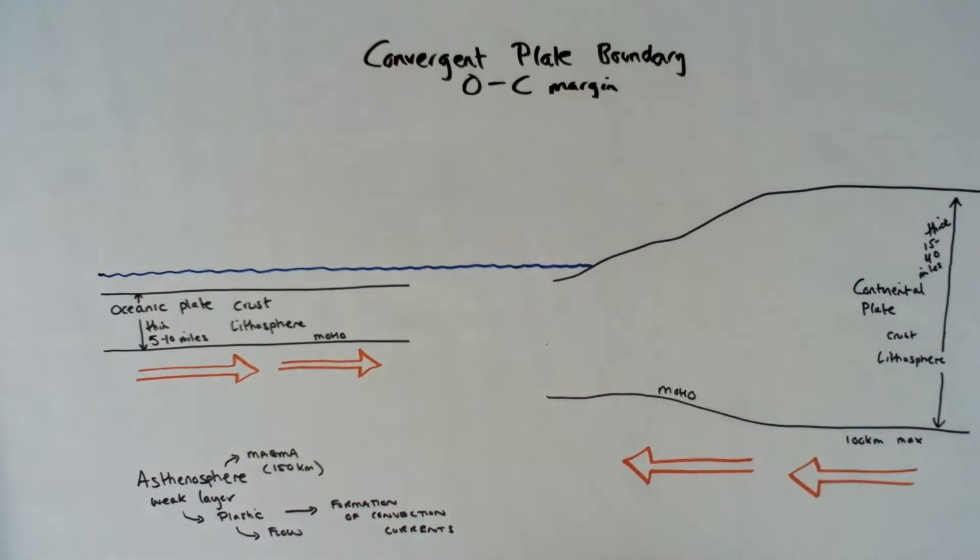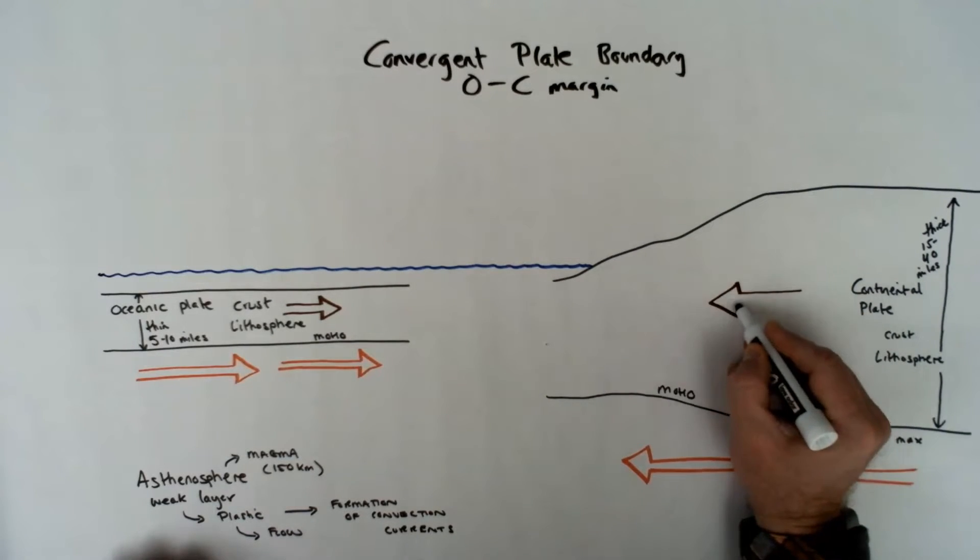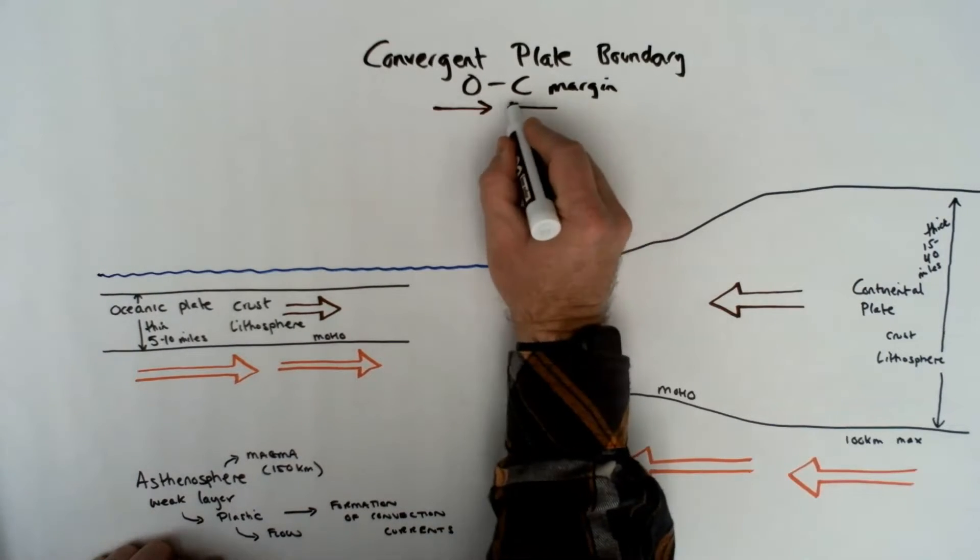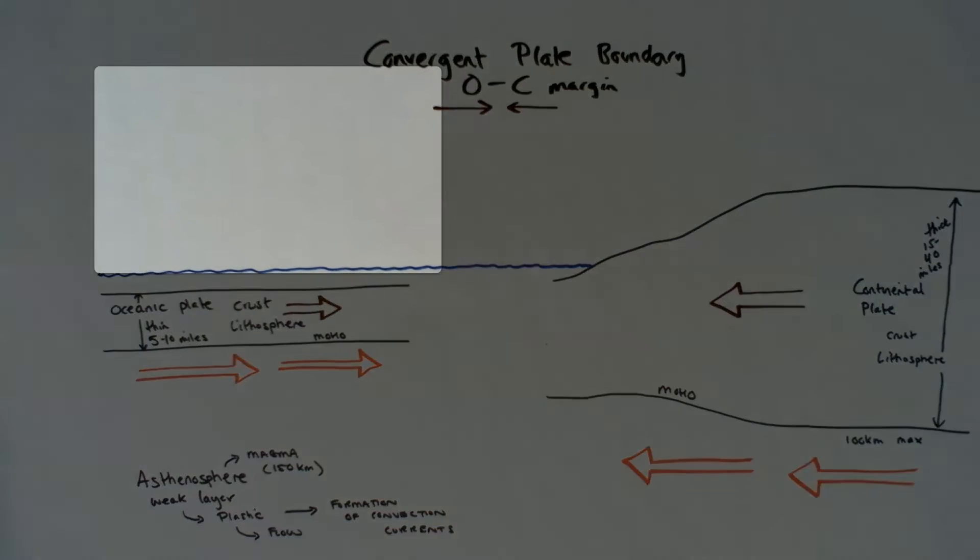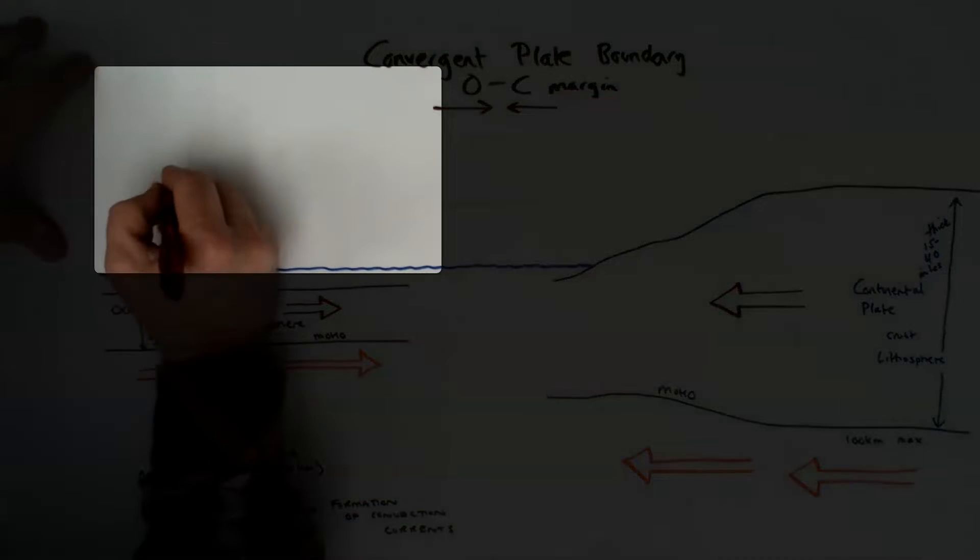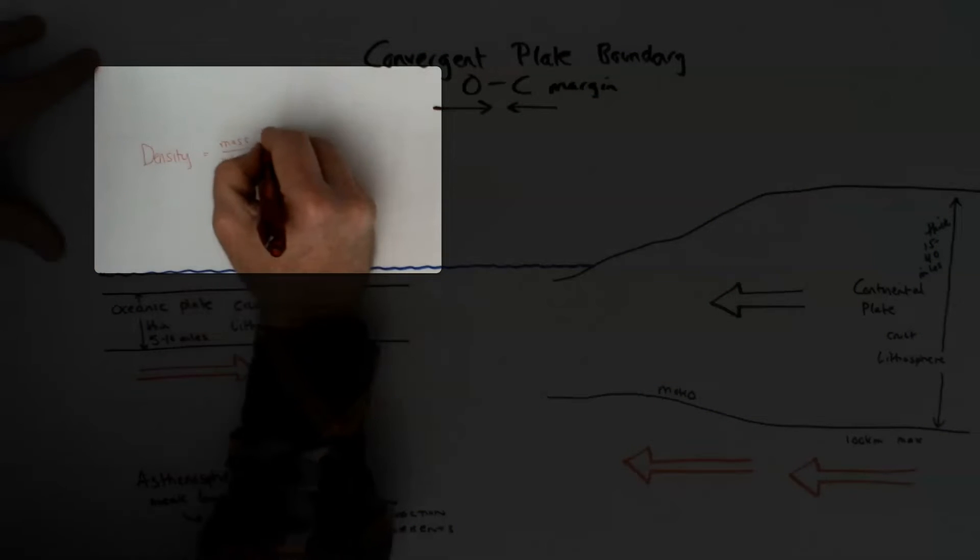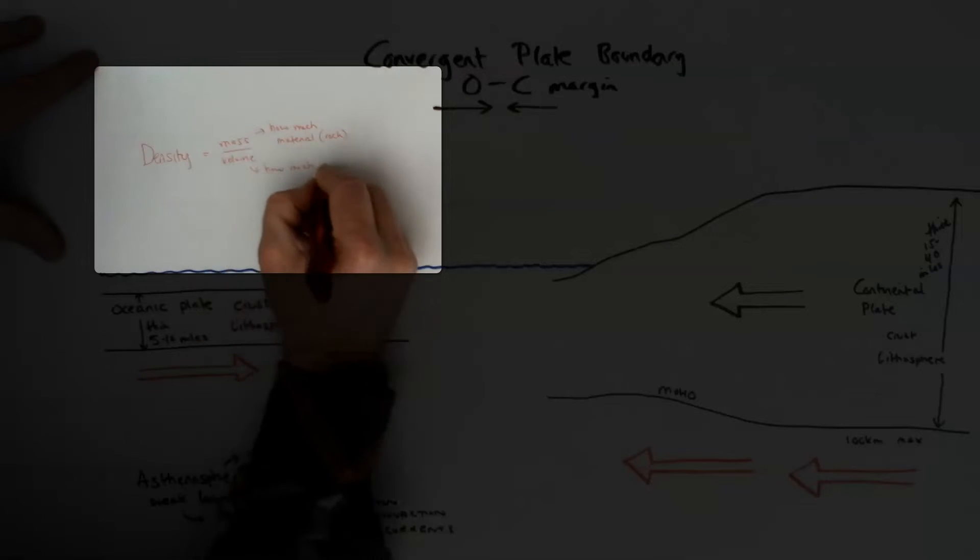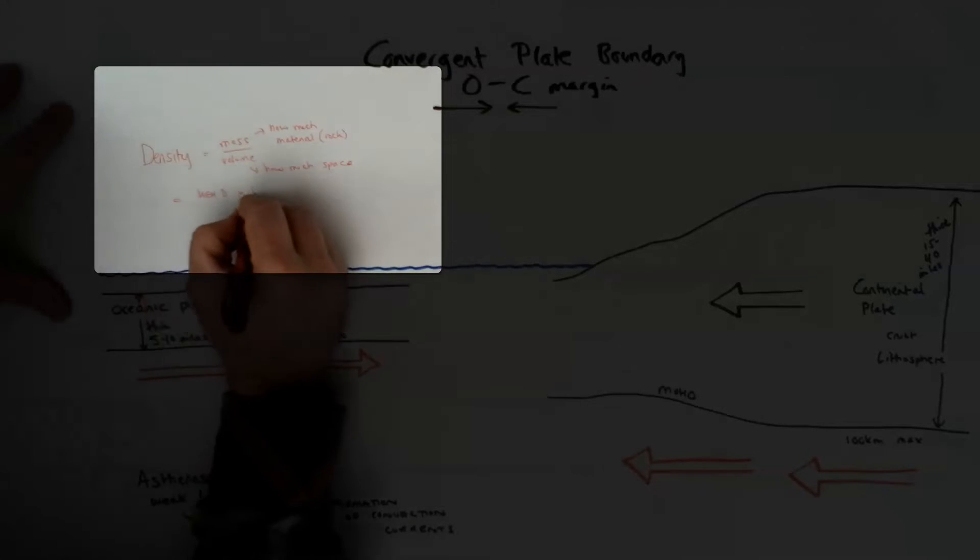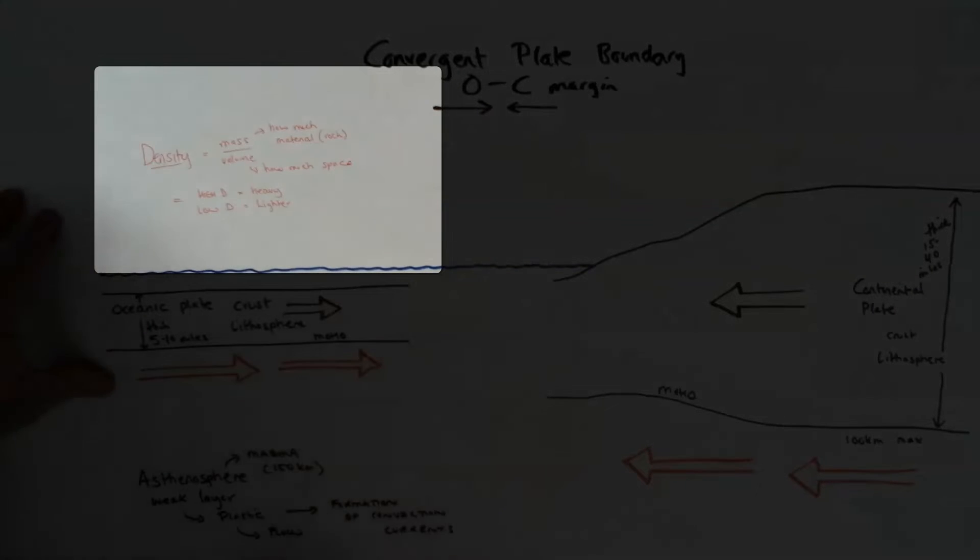So in discussing plate tectonics and convection currents, the convection currents are gonna move the plates. In this case, gonna move towards each other in a collision or convergent situation. And to really understand what happens when these two plates collide is gonna be density. Density is mass over volume, and looking at how dense each plate is based on the composition of what it's made of - the ocean plate's composition versus the continental plate's composition - and what's gonna happen when they collide based on the density and which one will sink, which one will float.